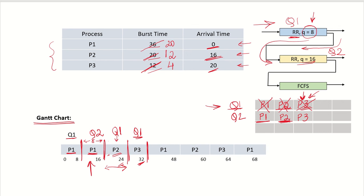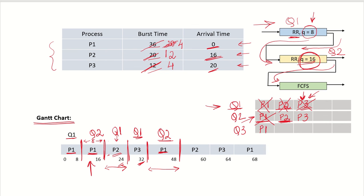Now Q2 has three processes: P1, P2, and P3, and no process is present in Q1. Considering round robin in Q2, P1 is at the head of the queue and is scheduled. The time quantum in Q2 is 16, so P1 runs for 16 time units until time 48. After running 16 time units, only 4 time units are left for P1, and it is moved to the third level queue Q3.